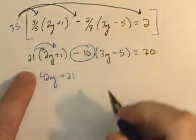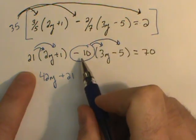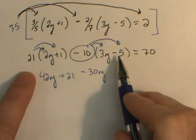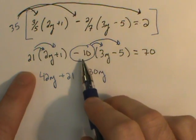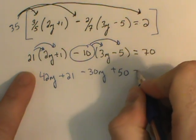And then as I look at this, I have a negative 10 that I need to distribute across its set of parentheses. And so that creates negative 30y. And then a negative times a negative will produce a positive. So negative 10 times negative 5 is positive 50, equaling 70.